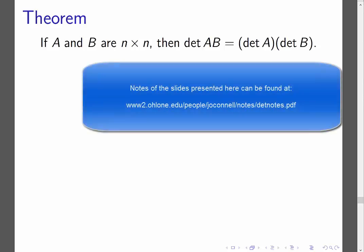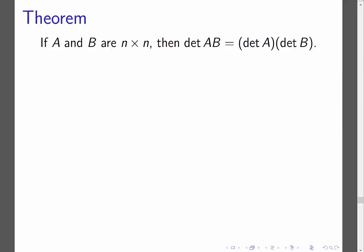This is the fourth video in the series on theorems and proofs about determinants, and it's the last video. This is also a very important result about determinants: if A and B are n by n matrices, then the determinant of AB equals the determinant of A times the determinant of B. This is a very useful result — the determinant of a product is the product of the determinants.